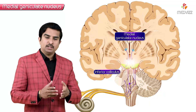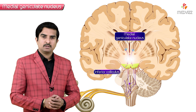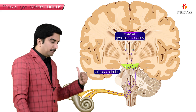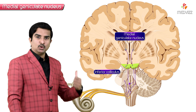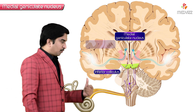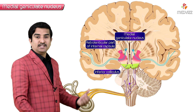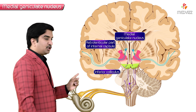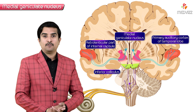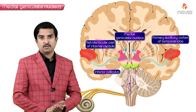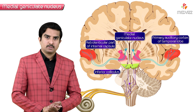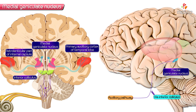After receiving auditory inputs from the inferior colliculus, the Medial Geniculate Nucleus projects its fibers via the retrolenticular part of the internal capsule and through the auditory radiation to the primary auditory cortex of the temporal lobe. The primary auditory cortex of the temporal lobe is area 41 and 42.